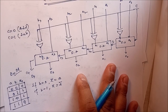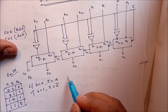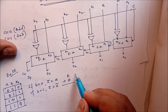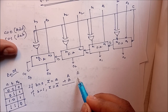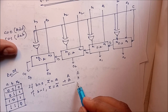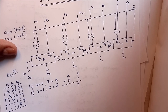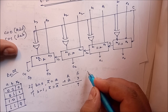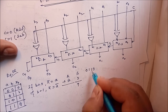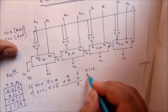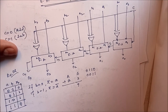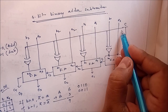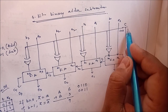Now, suppose we want to add two numbers: a plus b, say 6 plus 3. The answer is 9. Now, 6 is a 4-bit number: 0110, and 3 means 0011. Now, if c is equal to 0, that means the carry-in will be 0.